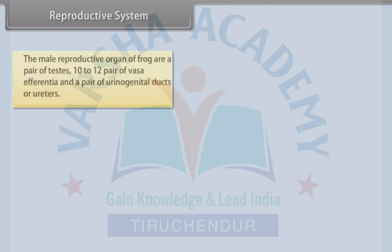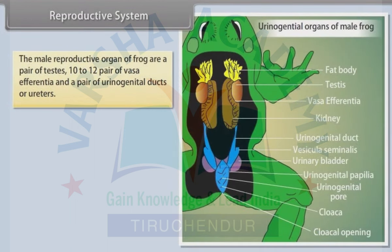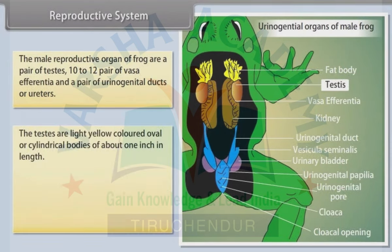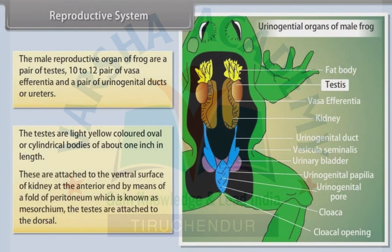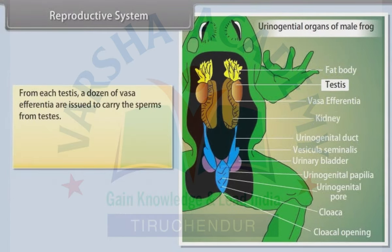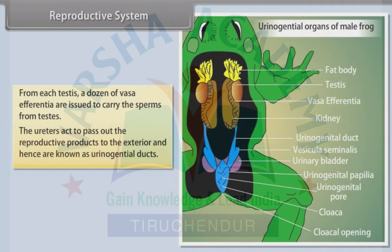Reproductive system (male): The male reproductive organ of frog comprises a pair of testes, 10 to 12 pairs of vasa efferentia, and a pair of urinogenital ducts or ureters. The testes are light yellow colored, oval or cylindrical bodies of about one inch in length, attached to the ventral surface of the kidney by a fold of peritoneum known as mesorchium. From each testis, vasa efferentia carry the sperm from the testes. The ureters pass out the reproductive products to the exterior and hence are known as urinogenital ducts.